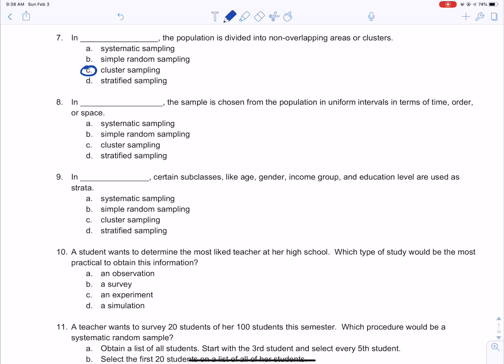In blank, the sample is chosen from the population in uniform intervals in terms of time, order, or space. That would be systematic because it's like every five minutes or every 12th person, things like that. That is systematic. In blank, certain subclasses like age, gender, income group, and education level are used as strata. So that would be stratified.